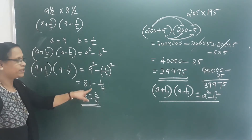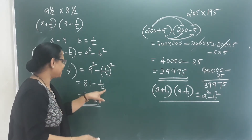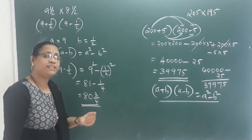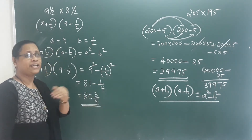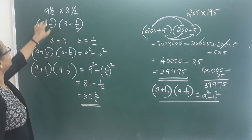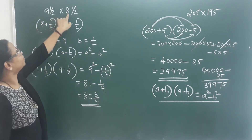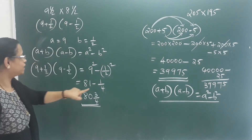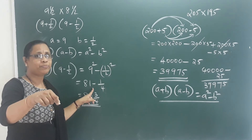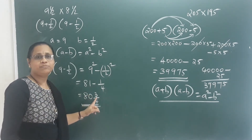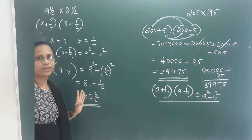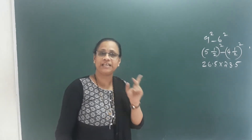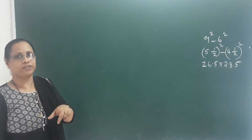The answer is 83 by 4. We have no subtraction issue — if you go to 81, it is 80 and a half. If you go to 9 and a half, it is 8 and a half. That's why we get 80 and 3 by 4. We can also write this as x plus y into x minus y equals x square minus y square.